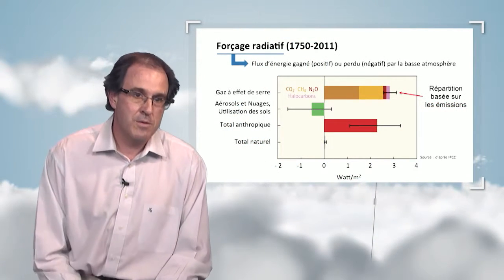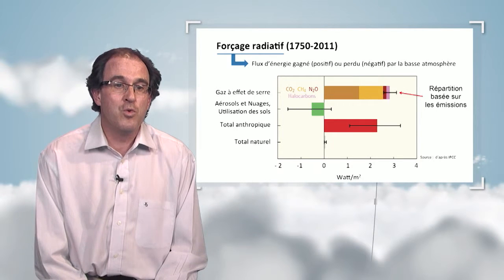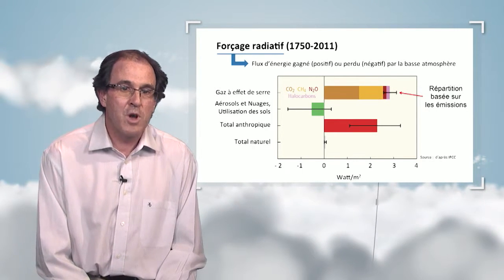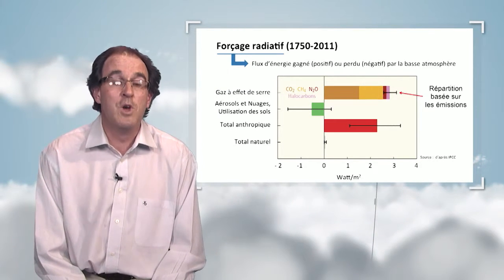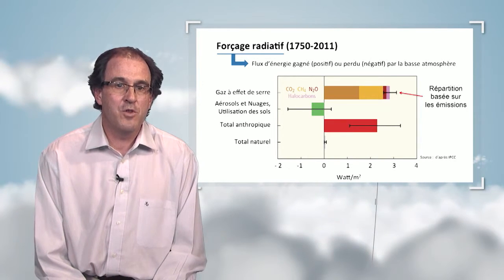Between 1750 and 2011, the integrated radiative forcing — the flow of additional energy trapped in the lower atmosphere due to greenhouse effect gases — amounts to 2.8 watts per square meter. Aerosols and clouds have a negative forcing; they cool down the climate system, though there is large uncertainty shown on the green bar. Adding both contributions, with high and low uncertainty, the total anthropogenic radiative forcing is approximately 2.8 W/m², ranging between 1.1 and 3.1 W/m² of additional energy trapped in the atmosphere. The natural system contributes partly, but it cannot explain everything happening in terms of radiative forcing.